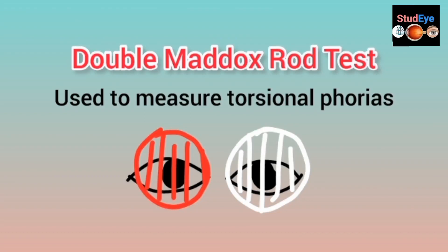Today we are going to discuss the Double Maddox Rod Test. This test is used to measure torsional deviations or hidden torsional deviations in the eye. We are going to discuss how to evaluate whether the patient has excyclophoria or incyclophoria.